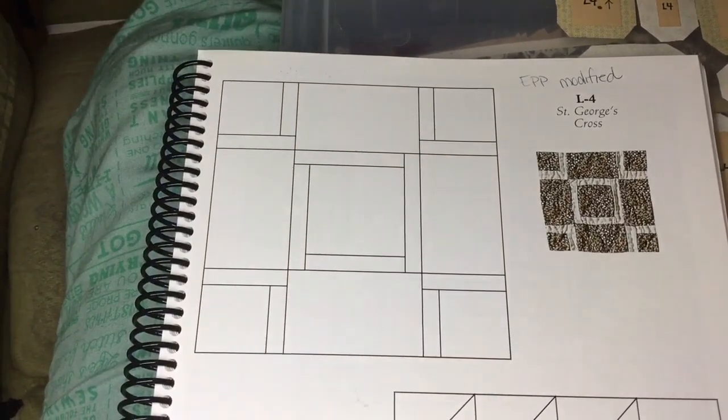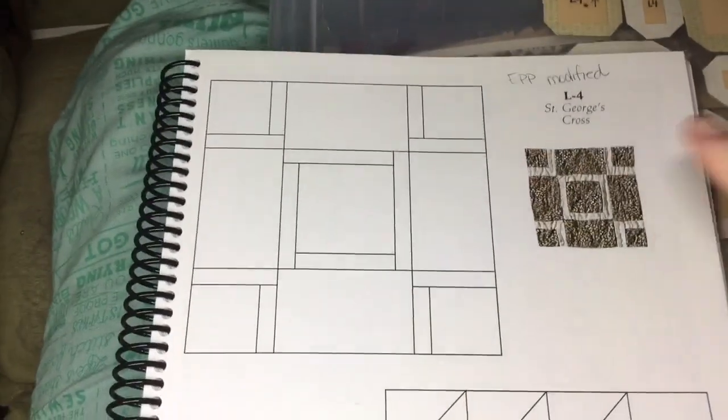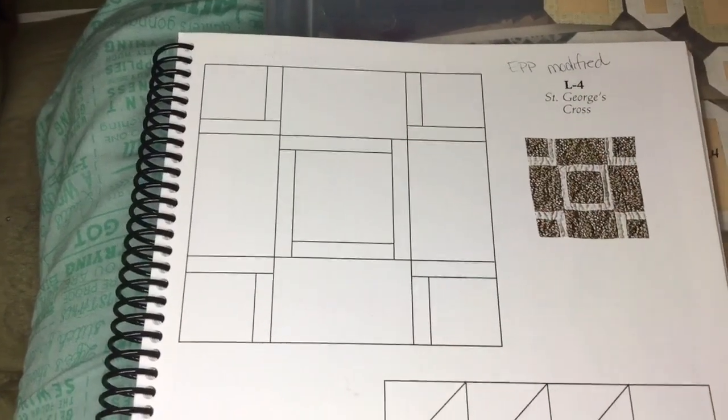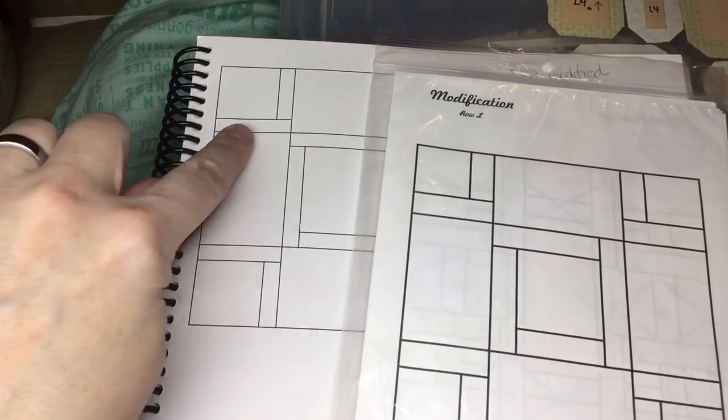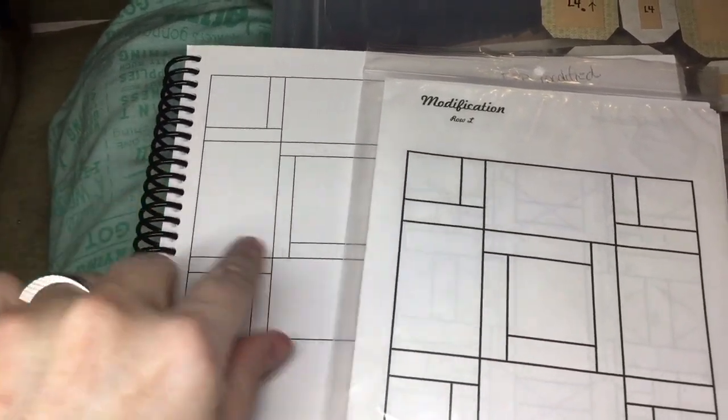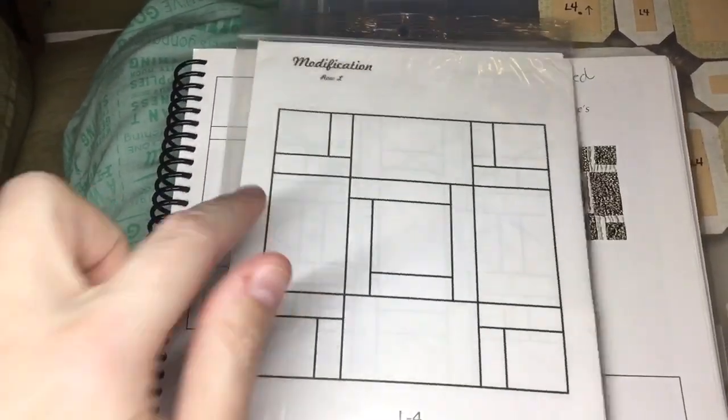Next on the checklist is the L4 block. L4 is a modified block. We are going to go to the book and basically they just widen these pieces so that they're easier to work with.